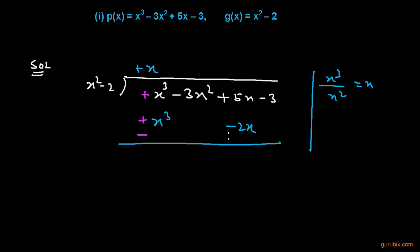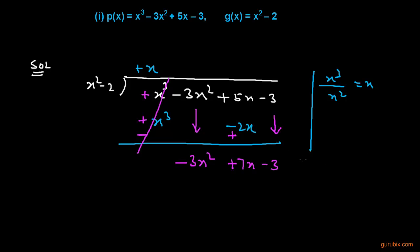Now we shall change the sign of these terms, so these two values will be cancelled. We now have minus 3x squared — brought it down — and here we have plus 7x minus 3, also brought down. To find the next term in the quotient, we divide minus 3x squared by the first term of the divisor.